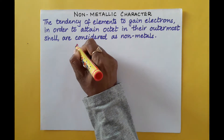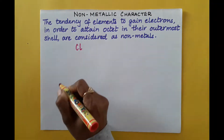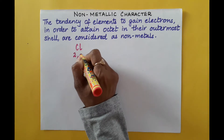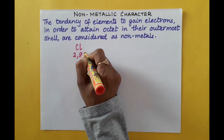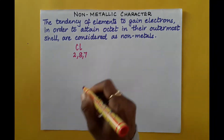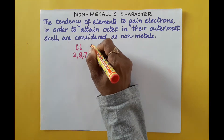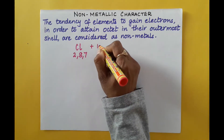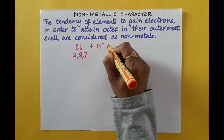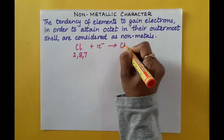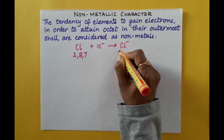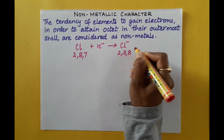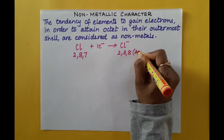For example, let us take chlorine. Chlorine's atomic number is 17 and electronic configuration is 2, 8, 7. So chlorine, to complete its octet, has to gain one electron and it becomes the chloride anion with configuration 2, 8, 8.